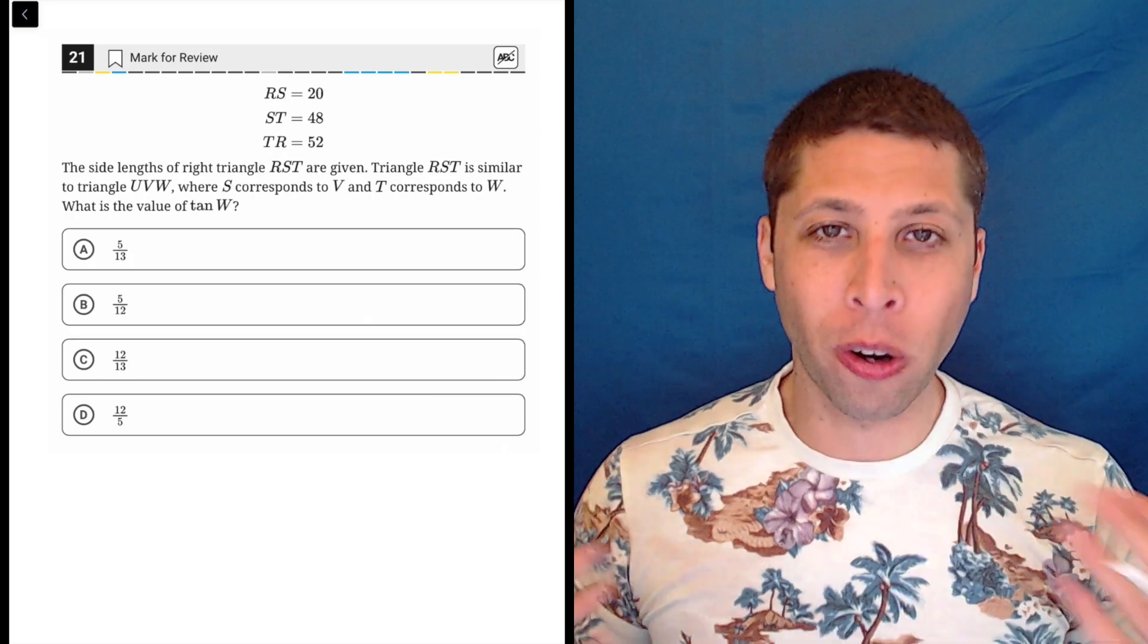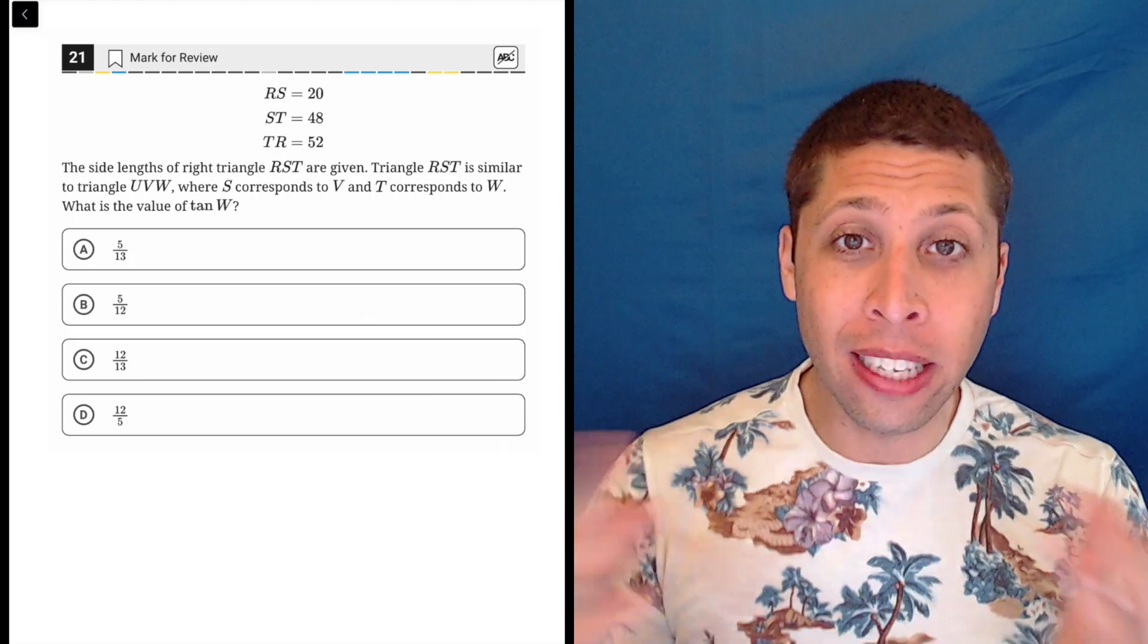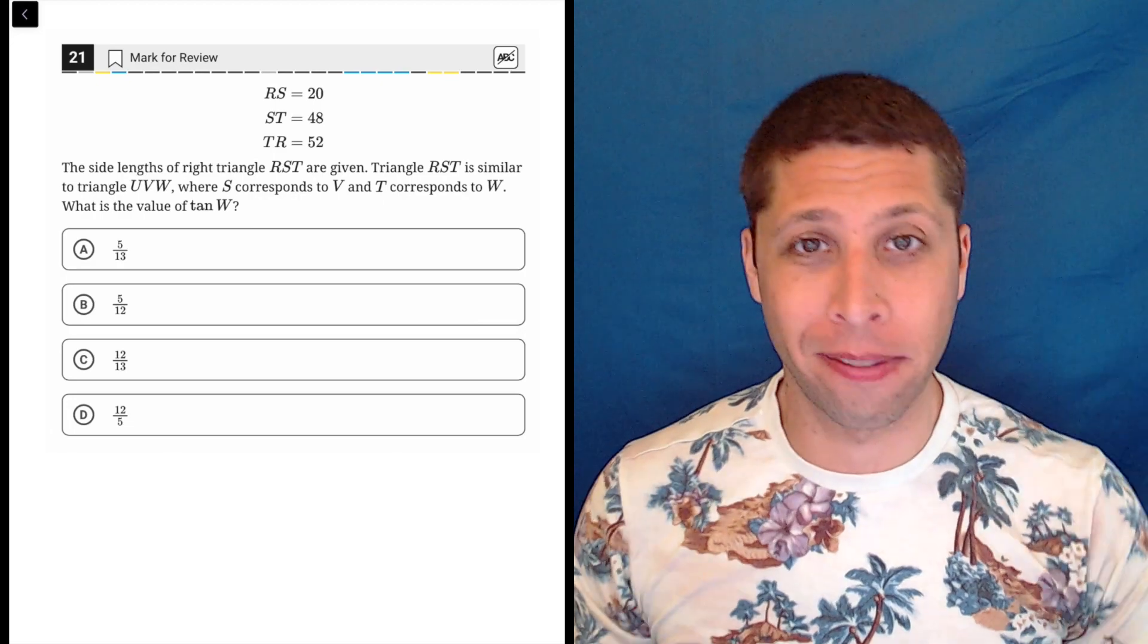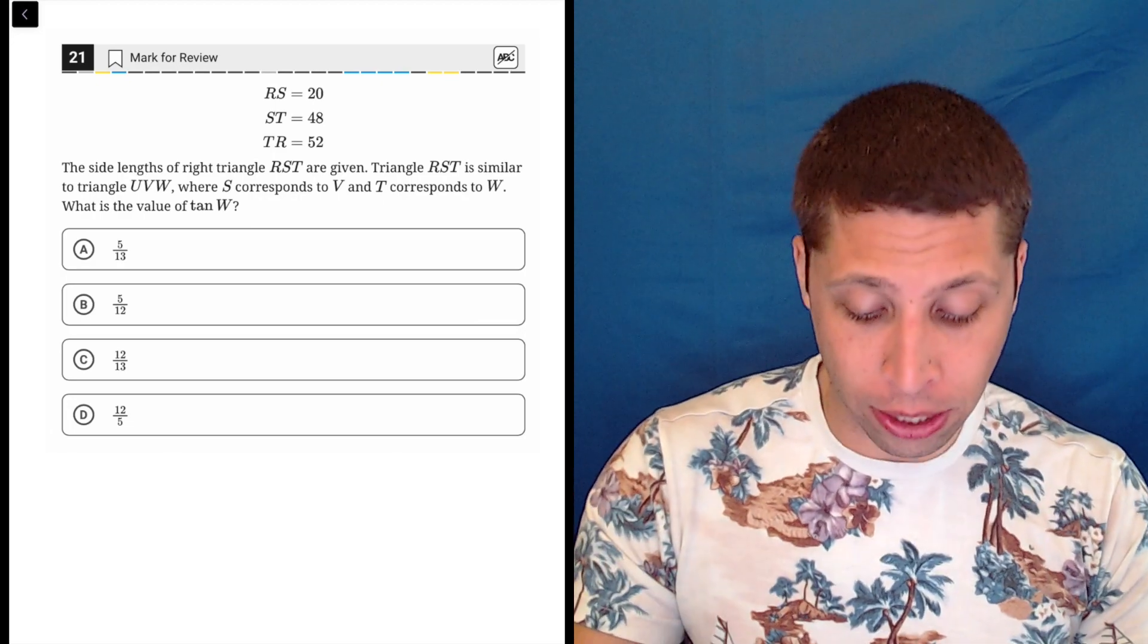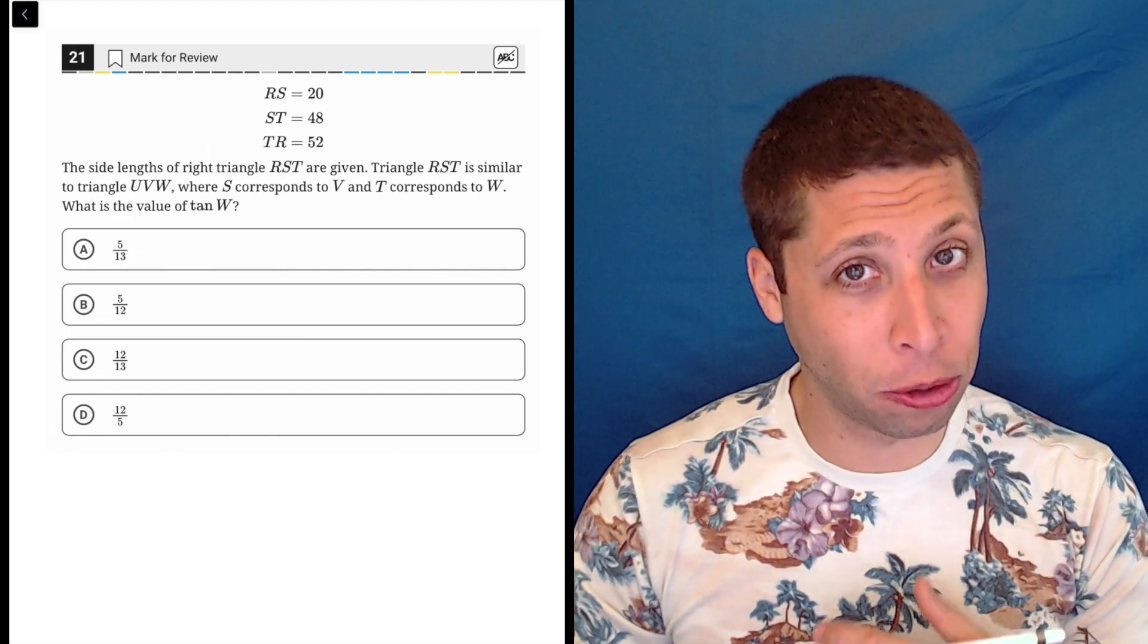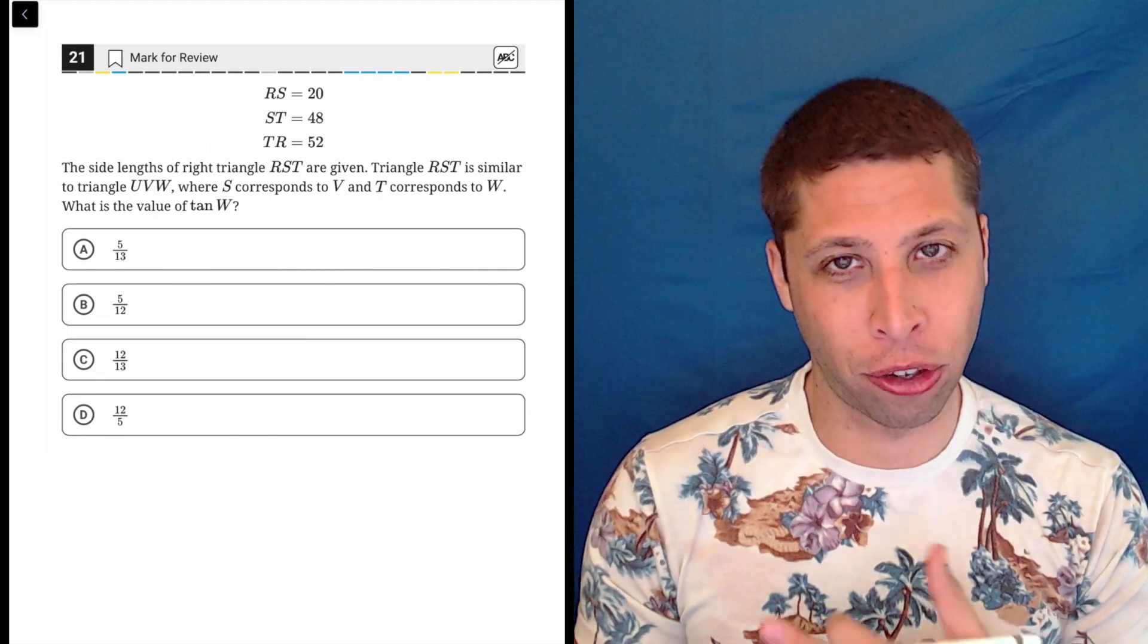We actually had a similar triangles question earlier in this section. It was very easy. We just aligned up the angles and moved them from one triangle to the other. Here, it's the same thing. The only difference is that we added trigonometry into the mix, and they didn't give us the picture.